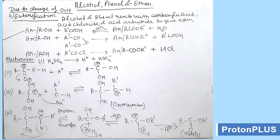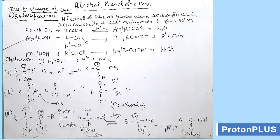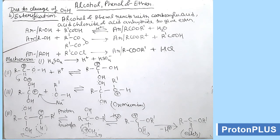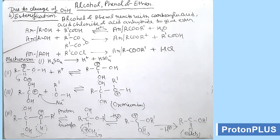If aliphatic or aromatic alcohol reacts with anhydride, that is R'CO-O-COR' (the anhydride group), then the product formed is ArOCOR' or ROCOR', that is ester, along with R'COOH. The OH bond will cleave in alcohol or aromatic alcohol.